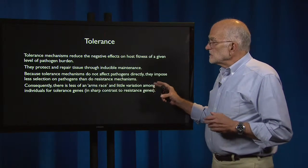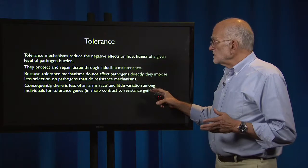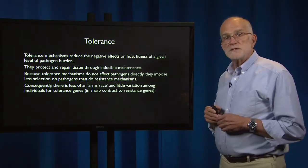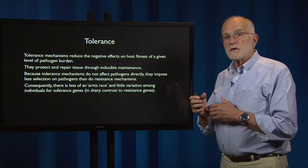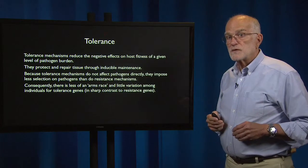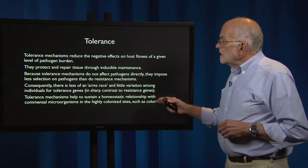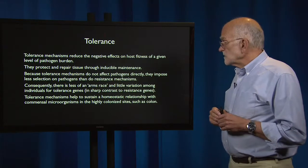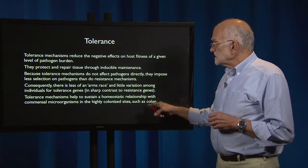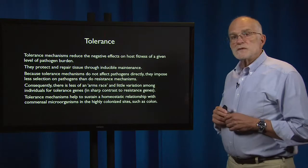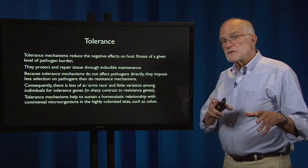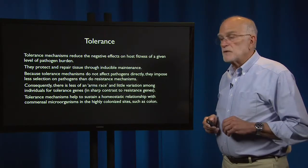If the host is tolerating a pathogen, that is a different outcome in host-pathogen co-evolution than if the host is resisting the pathogen. Consequently, there is less of an arms race, and there is little variation among individuals for tolerance genes, in sharp contrast to resistance genes, which are highly polymorphic — indicating a long history of co-evolutionary interaction. Tolerance mechanisms also help to sustain homeostatic relationships with commensal microorganisms in highly colonized sites such as the colon, so tolerance plays a big role in how the immune system manages the microbiota.